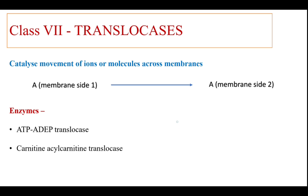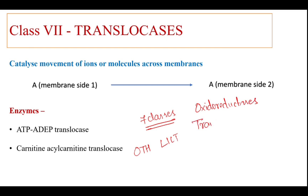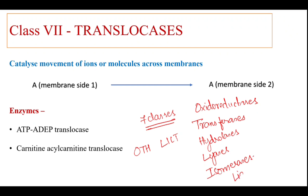So, this is about the classification of enzymes, where enzymes are classified into seven major classes remembered with the mnemonic OTHLILT: O is oxidoreductases, T is transferases, H is hydrolases, L is lyases, I is isomerases, L is ligases, and T is translocases. This enzyme classification is an important topic in the university examination. Thank you.